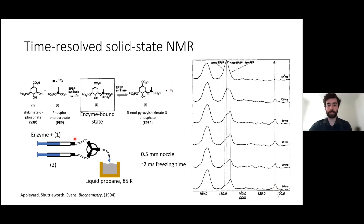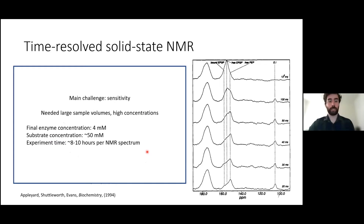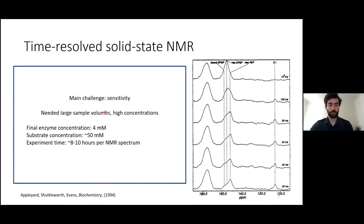This apparatus could freeze a solution in about two milliseconds, which was much faster than the reaction being studied, but slower than many processes we might encounter in fast-folding proteins. A big challenge in this experiment was sensitivity. This technique was really limited to proteins and enzymes that could be produced in large quantities, because of the large sample volumes and high concentrations needed. Any one of these experiments took many hours to acquire.